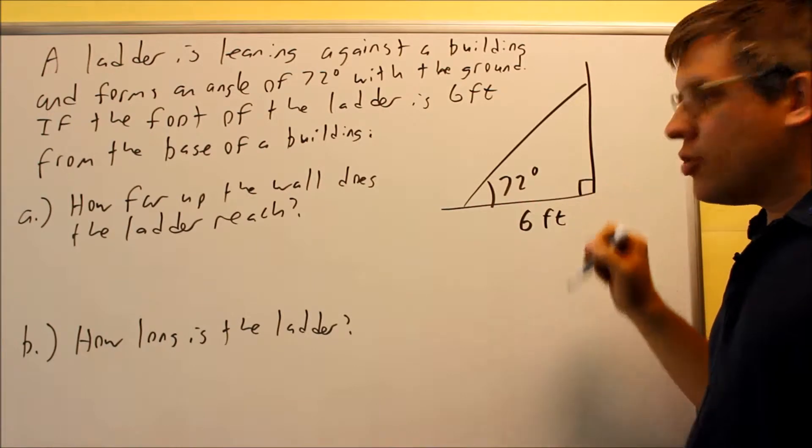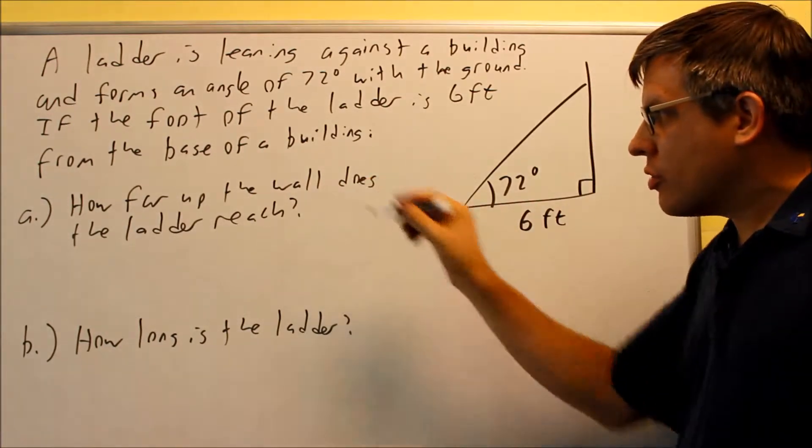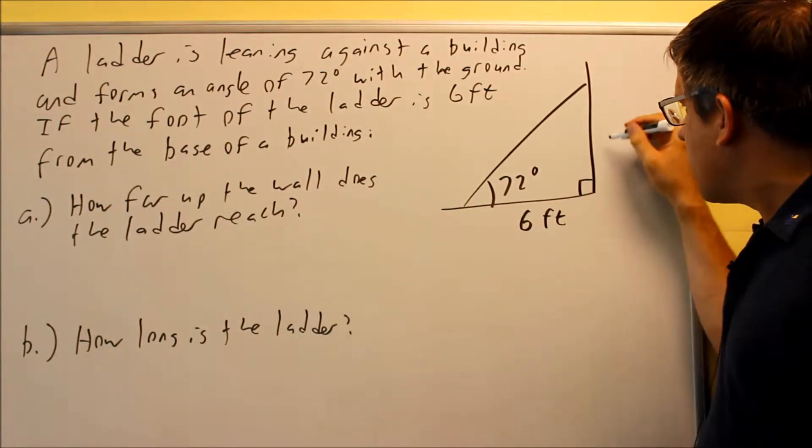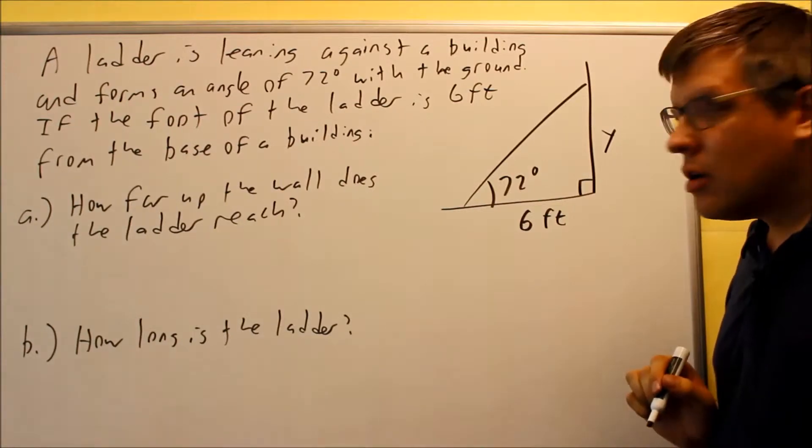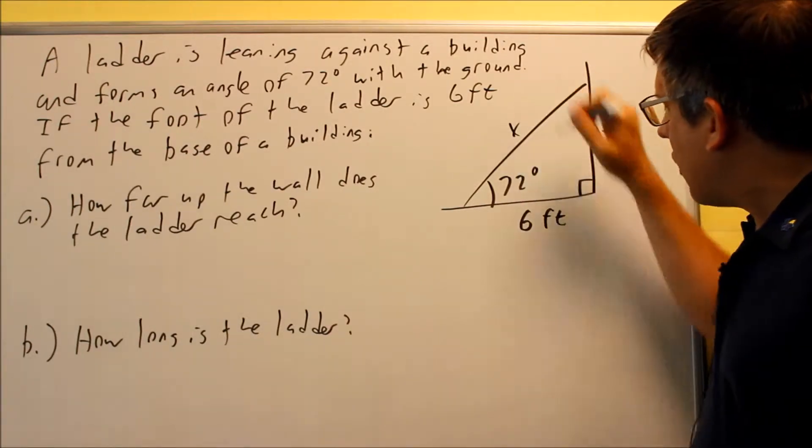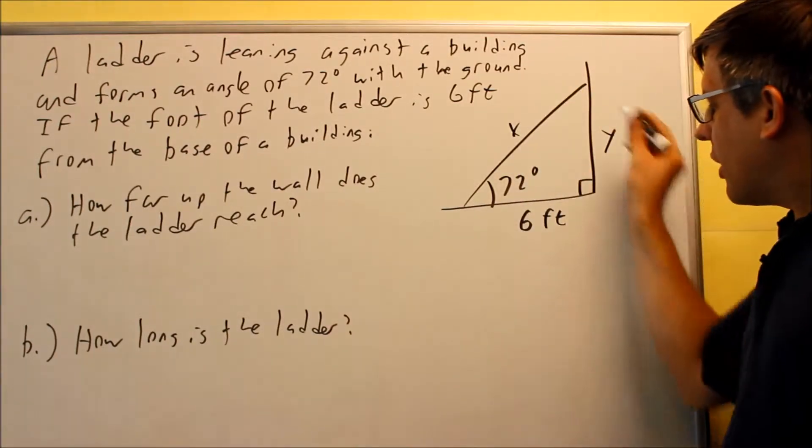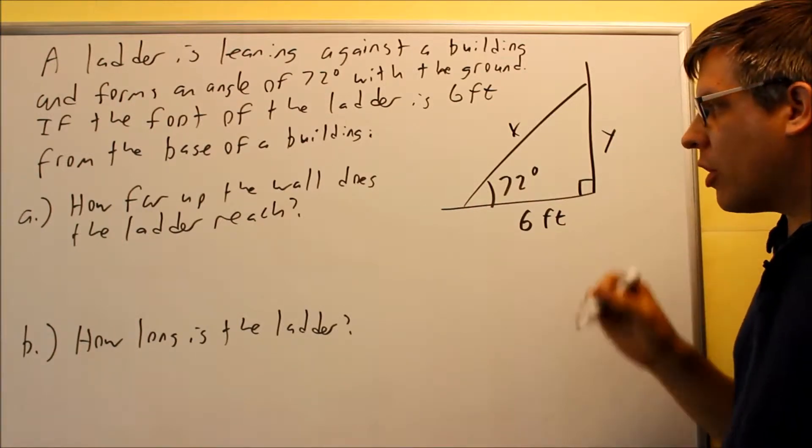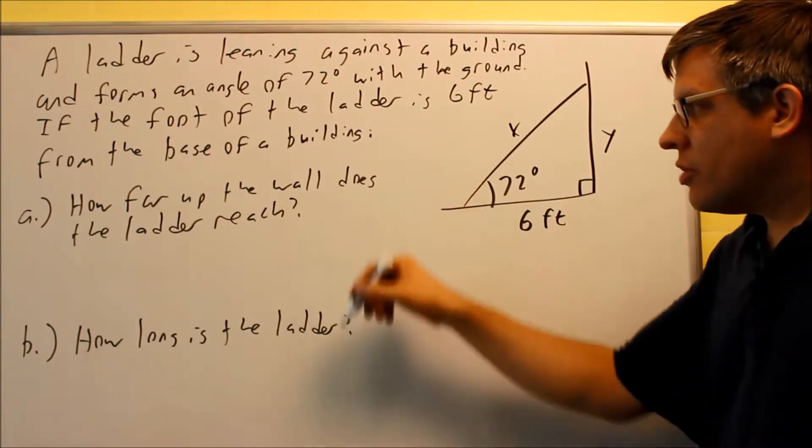So I have actually two different sides it's asking me for. The first one says how far up the wall does the ladder reach? I'm going to go ahead and just call that Y. And then how long is the ladder? I'll call it X. Okay, so now that I have this labeled, I want to now solve for these two questions.